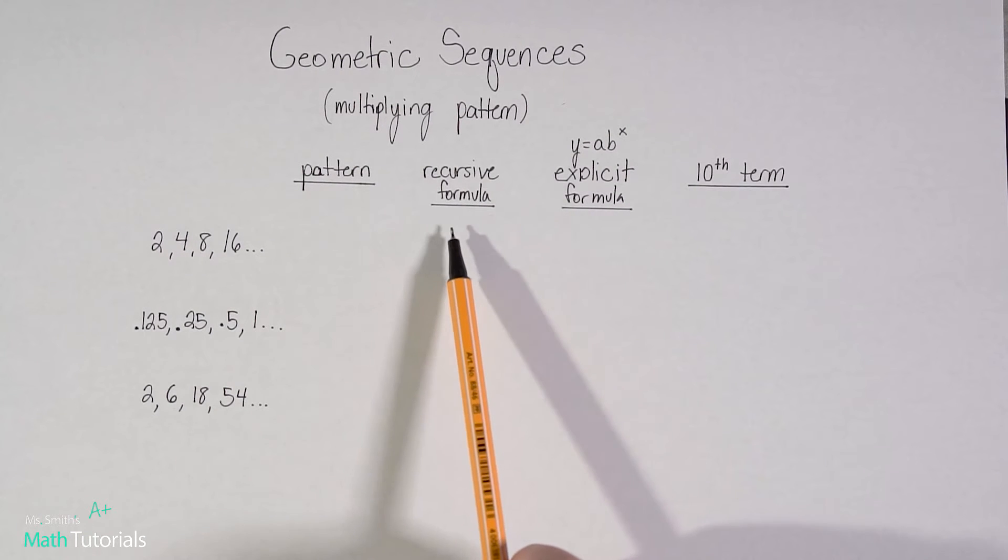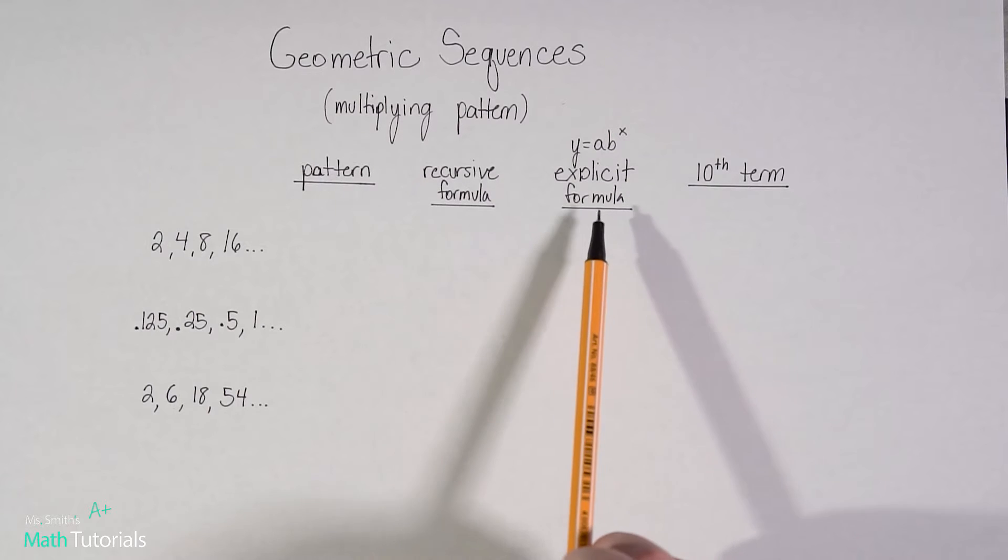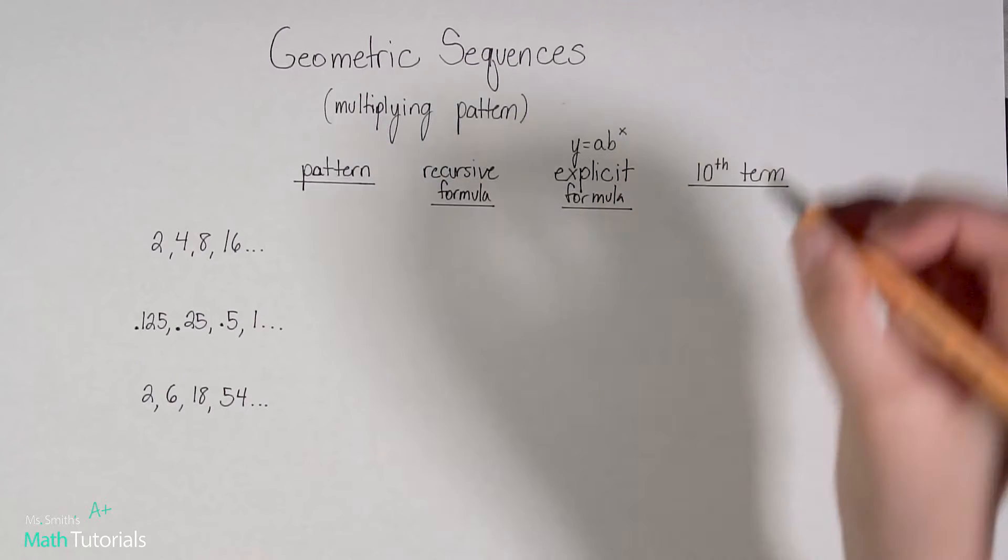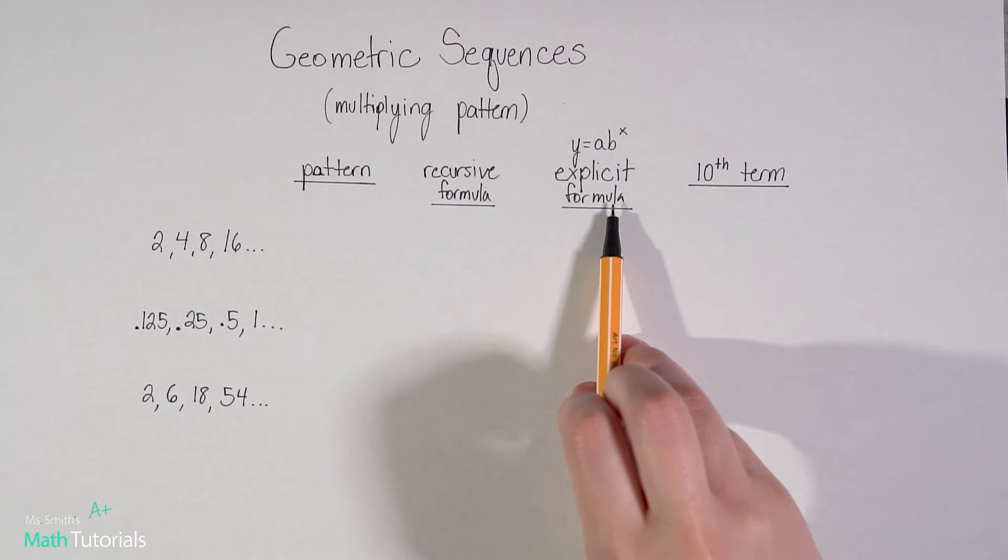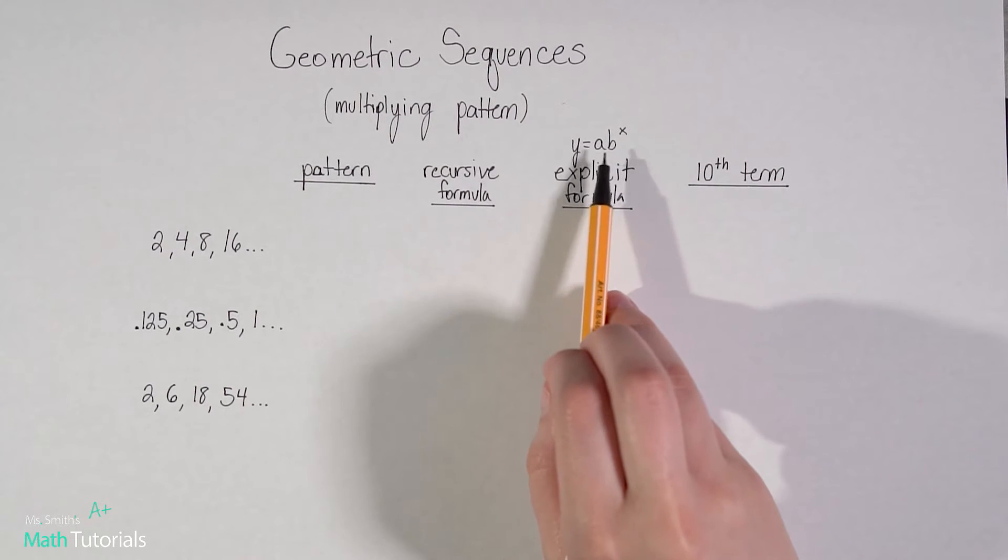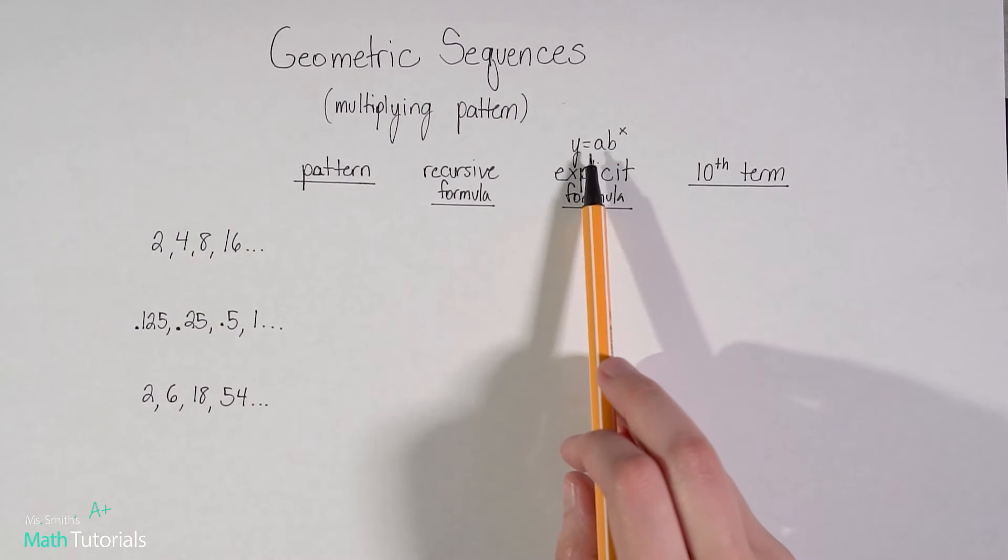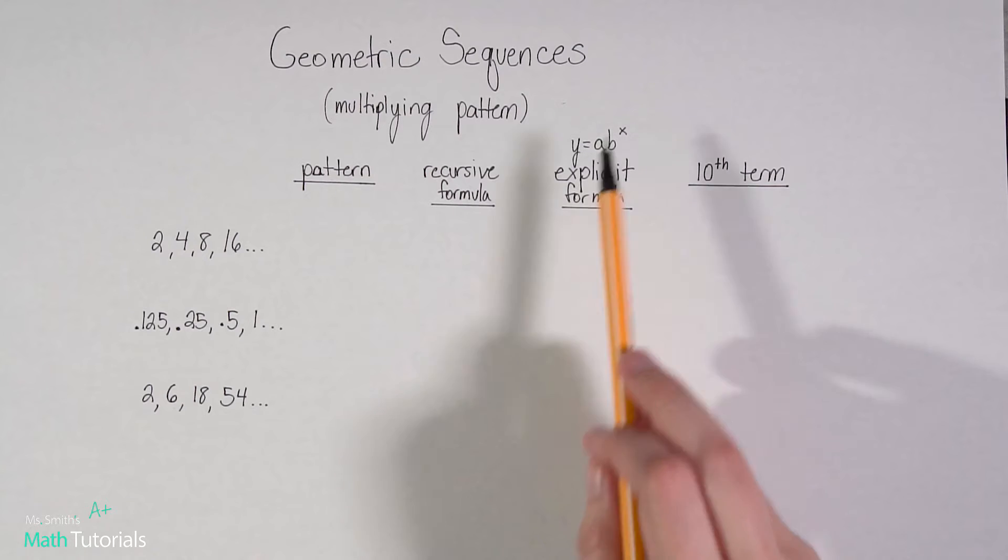We're also going to have our recursive formula. That doesn't change. Our explicit formula, instead of being y equals mx plus b, like it was in our previous formula, now when we're talking about geometric, it's going to be y equals a times b to the power of x.